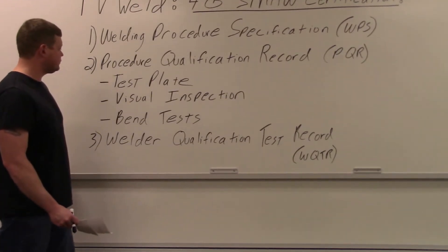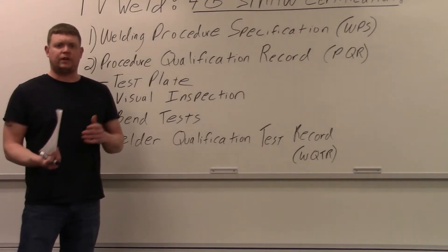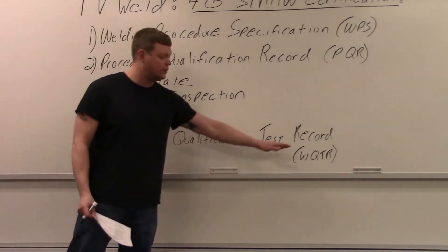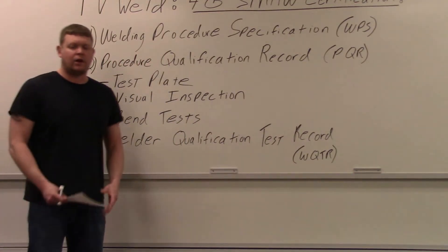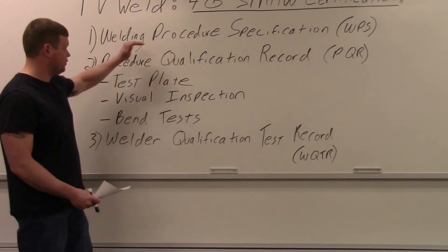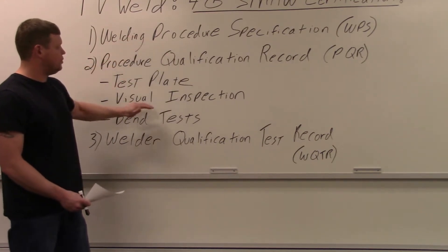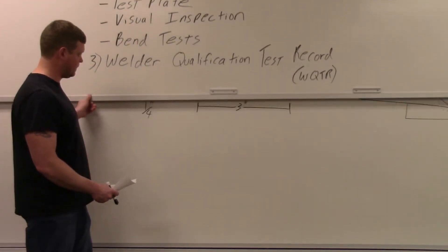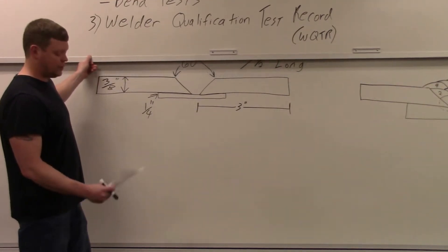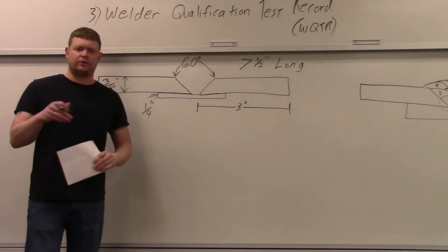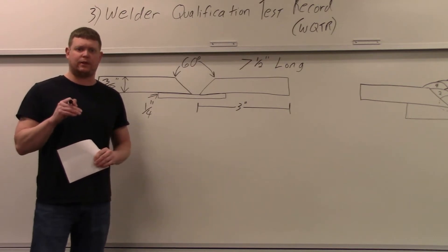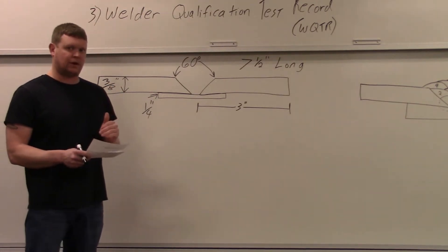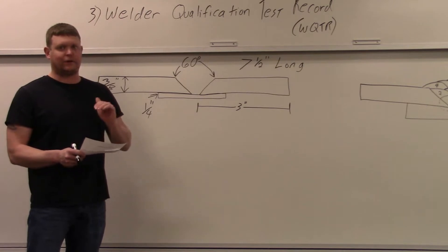And then last when you're done with the bend test, what they're going to give you is an actual certification form, a welder qualification test record or commonly referred to as a WQTR. That's your actual welding cert. So once you get through the WPS, the PQR proves the WPS, the tests that you do in the PQR are going to make you a certified welder. What we're going to try and put in PDF format in the video description of this video. So check that out. We're going to try and put the WPS, the PQR, the WQTR as a PDF in the video description.